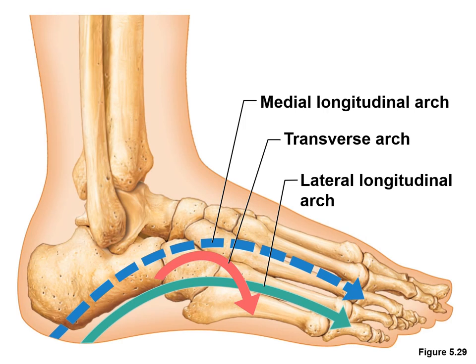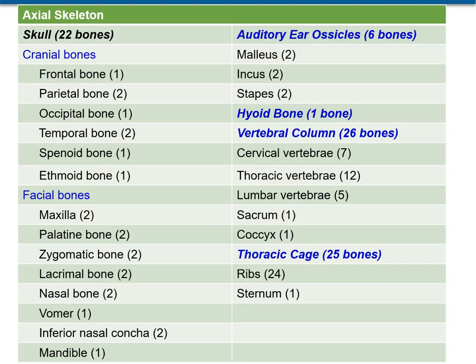The flexibility conferred to the foot by these arches facilitates functions such as walking and running. The next slides summarize all 206 bones in the adult human skeleton.